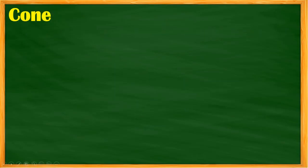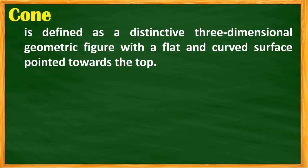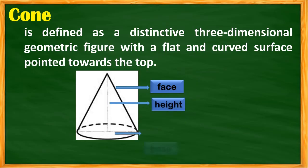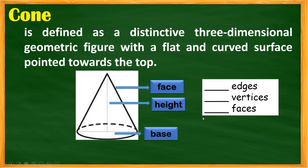Now let's look at the cone. A cone is a distinct three-dimensional solid figure with a flat and curved surface pointed towards the top. It has faces, height, and a base. The cone has 0 edges because it has a curved surface, 1 vertex, and 2 faces.